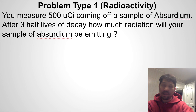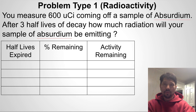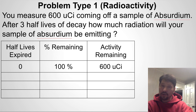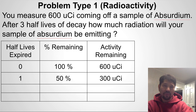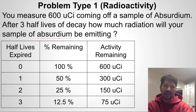Problem type 1 might come without a percentage and give you values of activity. You measure 500 microcuries coming off a sample of Absurdium. After three half-lives of decay, how much radiation will your sample be emitting? Using the table method, we add an activity remaining column. At no half-lives we have 600 microcuries; after one half-life, 300 microcuries; after two half-lives, 150 microcuries; and after that third half-life we're down to 75 microcuries — that's the answer.